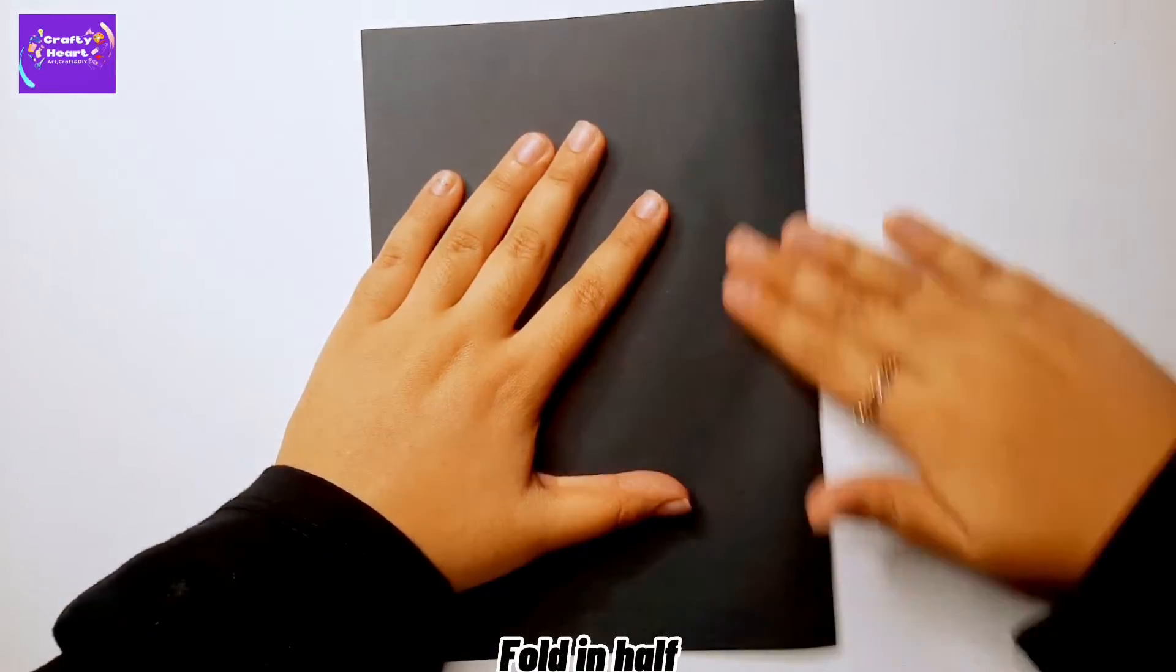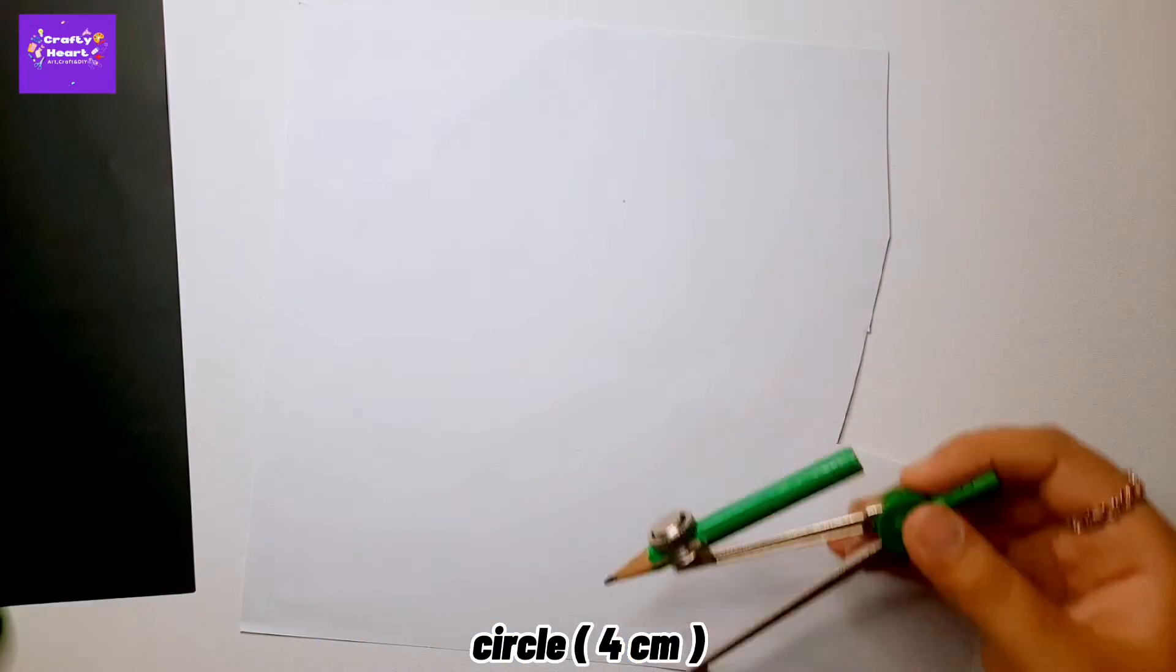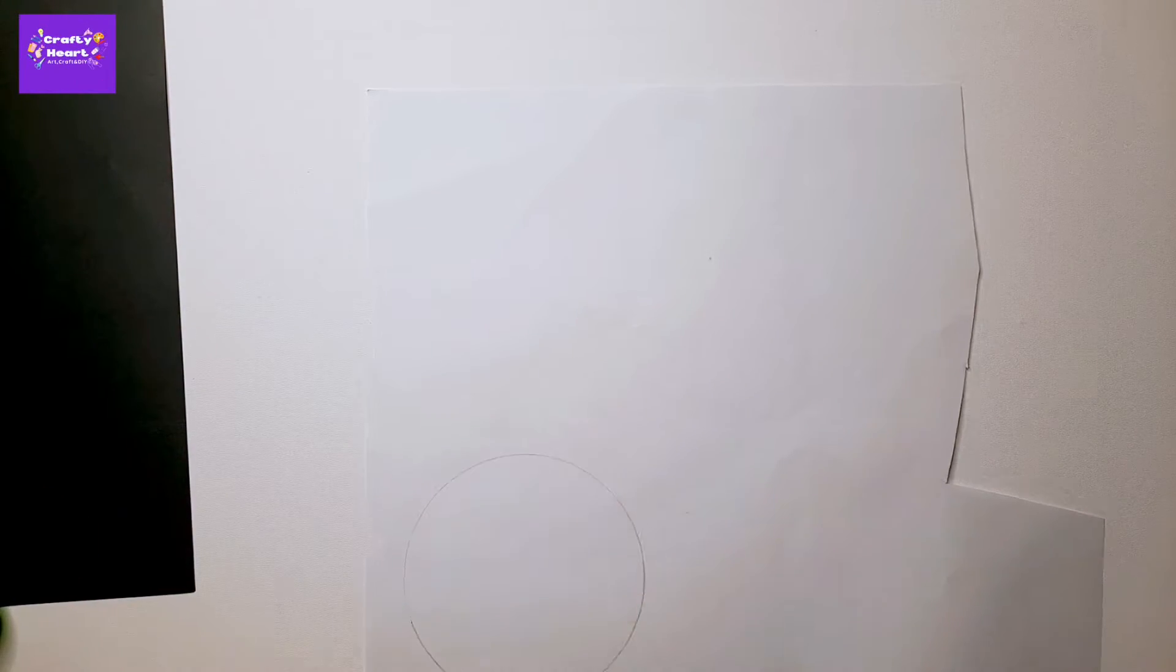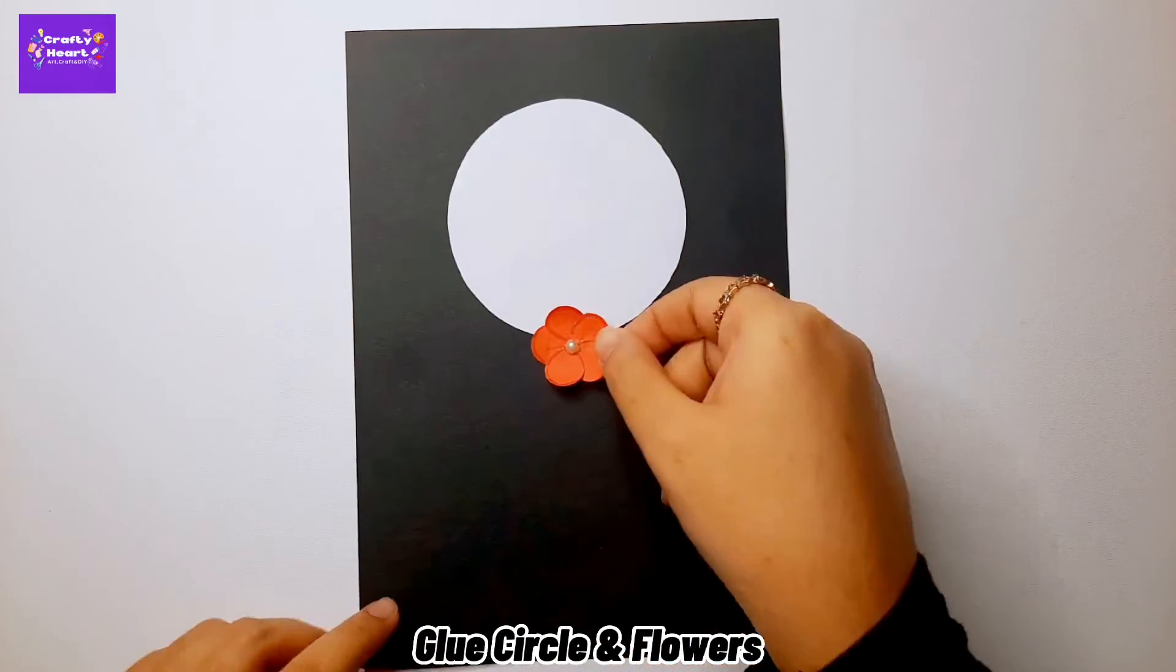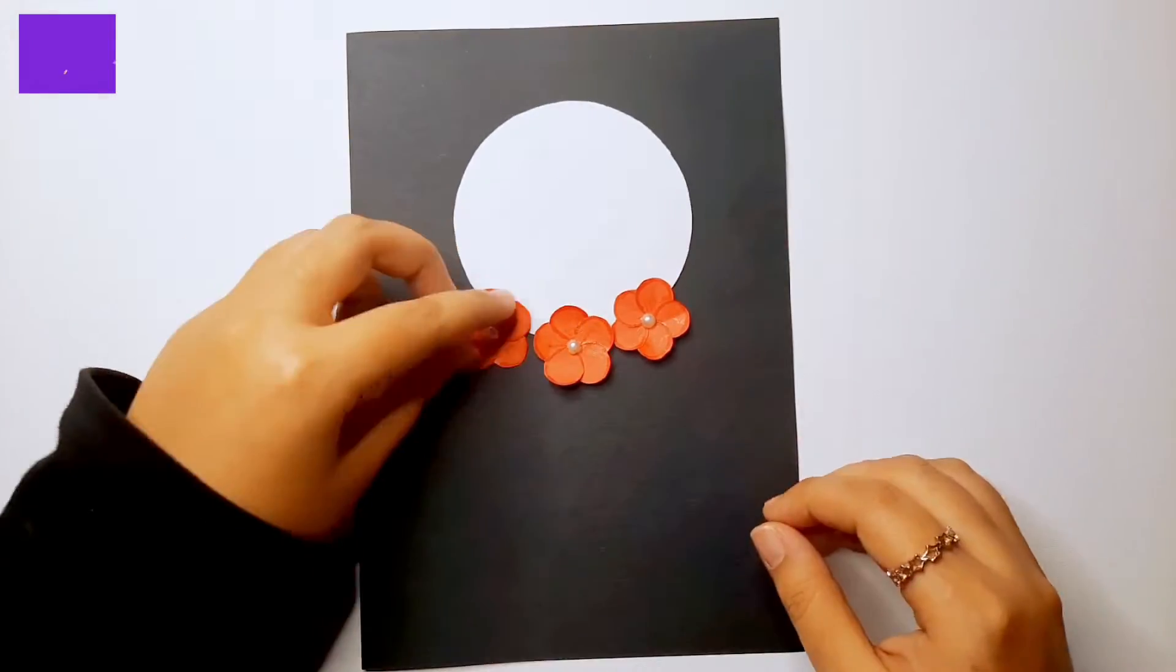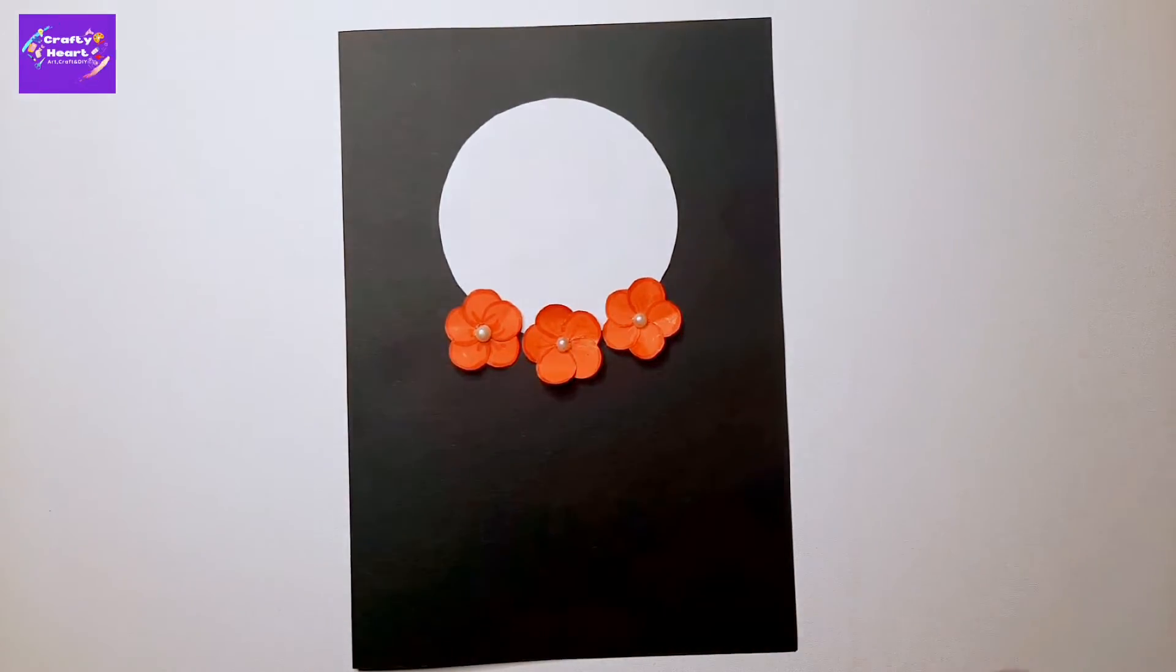Moving on I am using this black colored paper and folding the paper in half. Here I am drawing a 4 cm circle on this white paper and I am cutting it. Now I will glue the circle and flowers on the card like this.